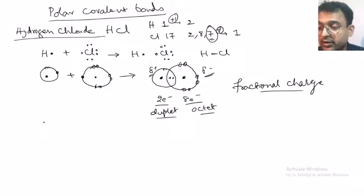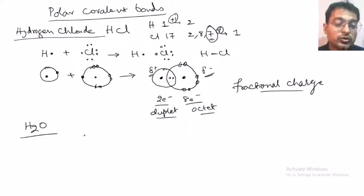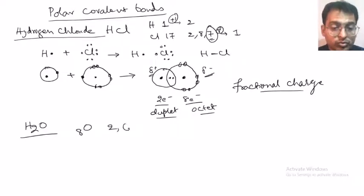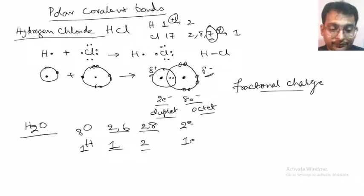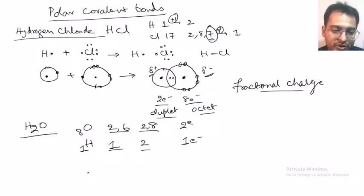Let us see another example — water, H2O. In the water molecule, oxygen is 8 with configuration 2,6. Hydrogen is 1. Hydrogen wants to become the duplet configuration and oxygen wants to become the octet configuration. So oxygen needs 2 electrons and hydrogen needs 1 electron. How is it going to combine?